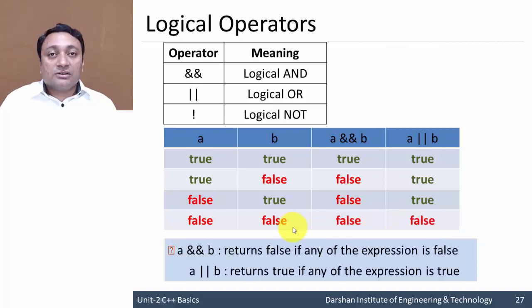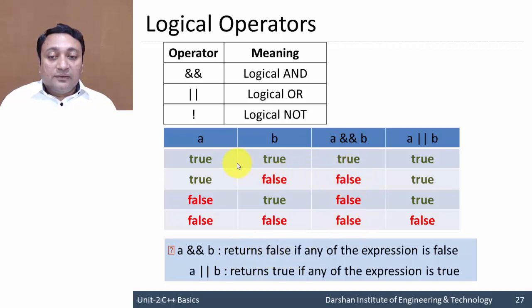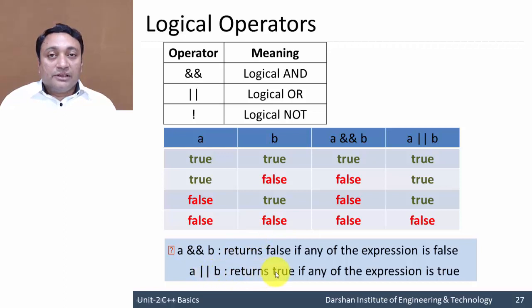If both expressions are false, AND returns false and OR also returns false. In summary: the AND operator returns false if it finds any expression as false. Logical OR returns true if it finds any expression as true.